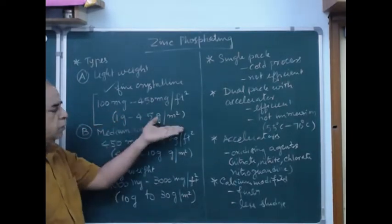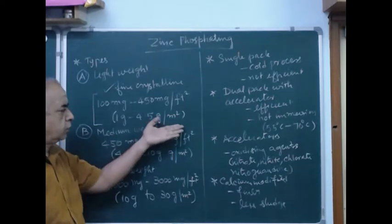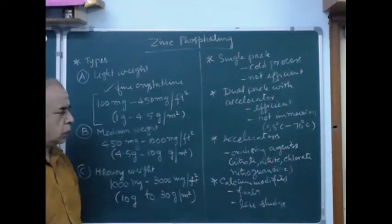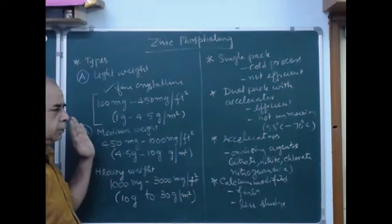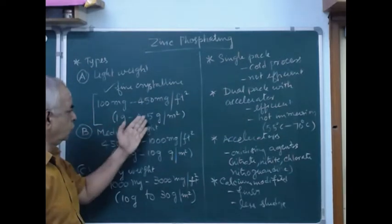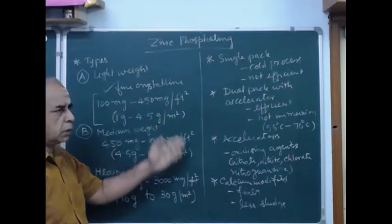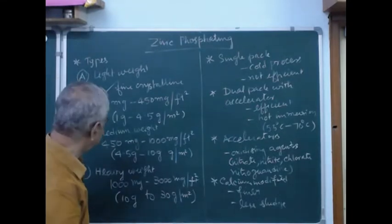It can be interpreted in terms of grams per square meter also - just divide by 10, so 1 to 4.5 grams per square meter.